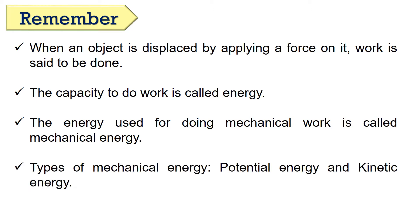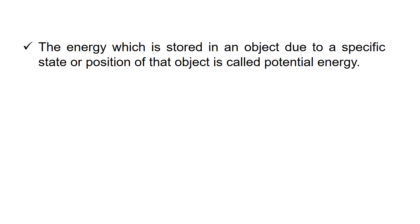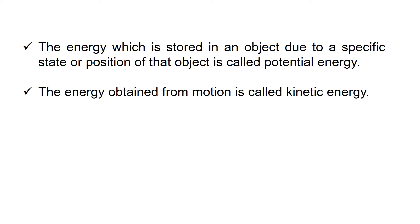There are two types of mechanical energy: potential energy and kinetic energy. The energy which is stored in an object due to a specific state or position of that object is called potential energy. The energy obtained from motion is called kinetic energy.